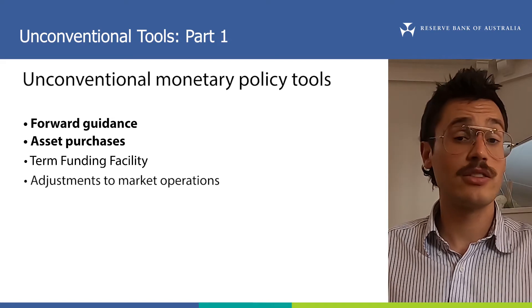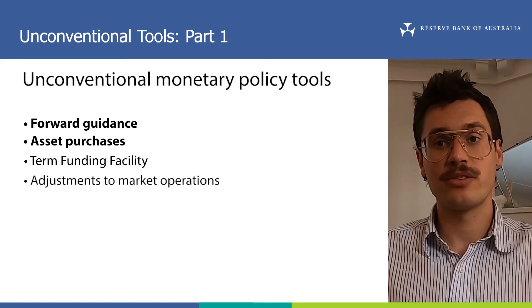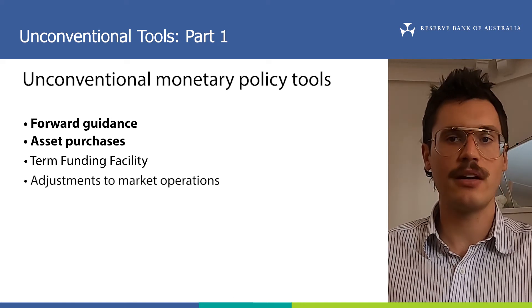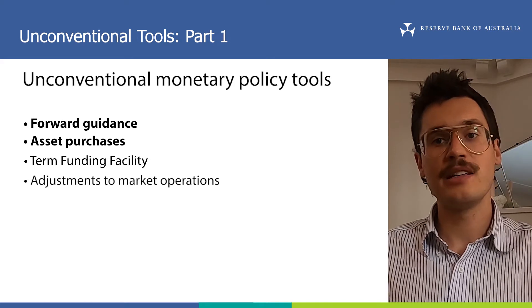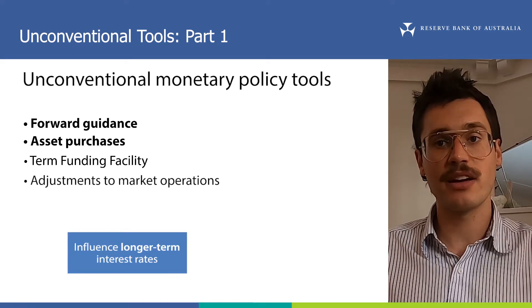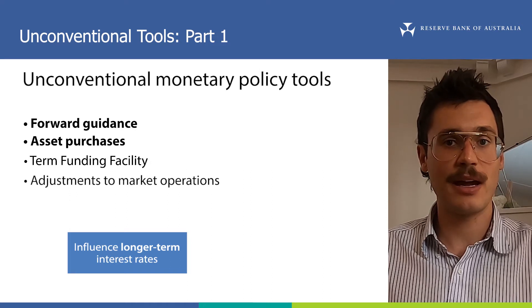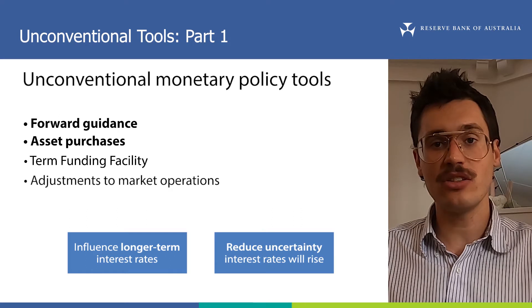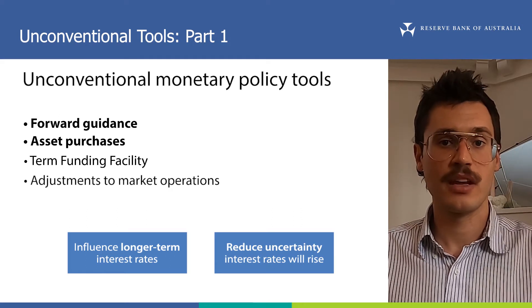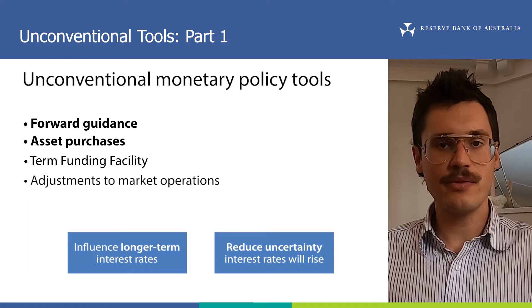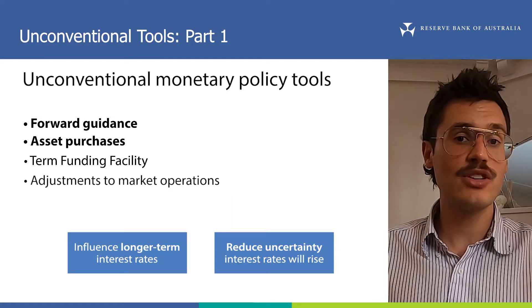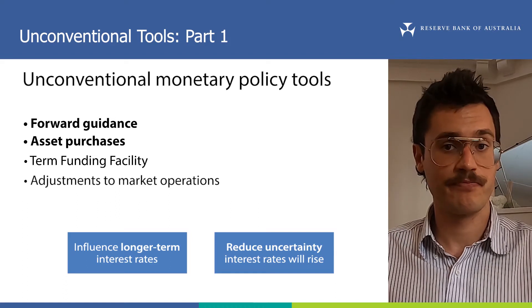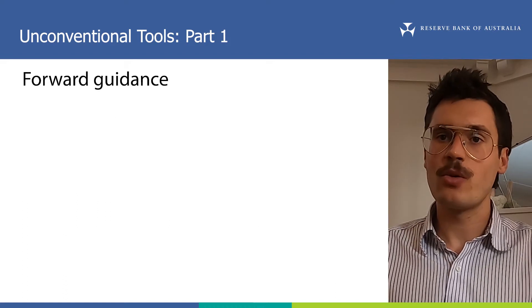In the next video, we'll cover the term funding facility and market operations. The main way unconventional tools work is by influencing longer term interest rates, both directly and through expectations about future short term interest rates, and through reducing uncertainty that interest rates might rise in the future. This means that unconventional tools have the same key objective as lowering the cash rate target: to lower interest rates across the economy.